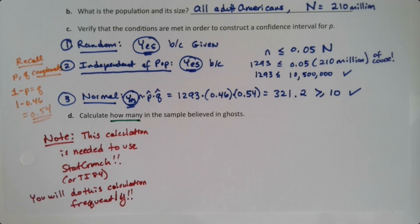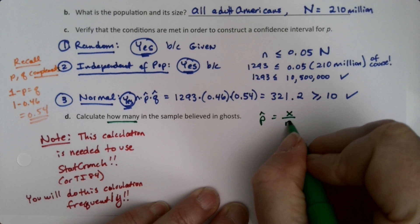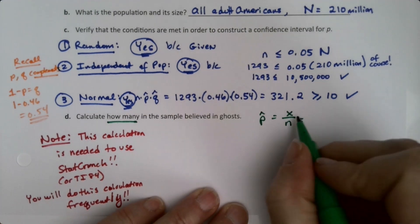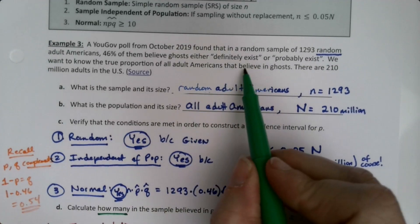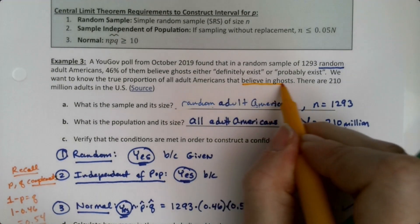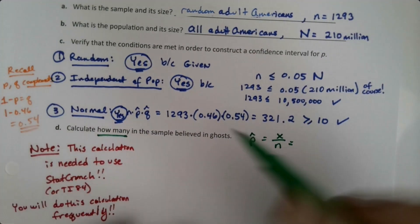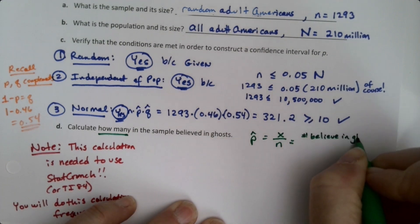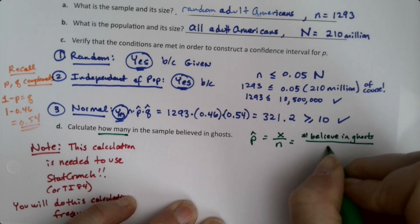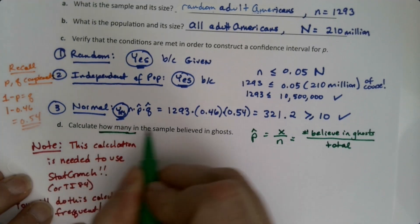They're asking us how many believed in ghosts. We know that p hat equals x over n. This is the number of successes, which in our case is believe in ghosts—that's what we were looking for. So this is the number that believe in ghosts divided by the total. In other words, they're asking for x—they want us to know what is x. That's what we're looking for.